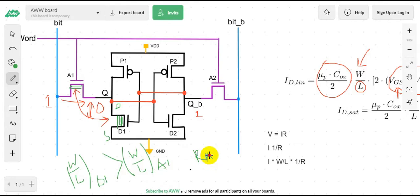R_A1 will be greater than the R_D1. So this is actually the read stability criteria.